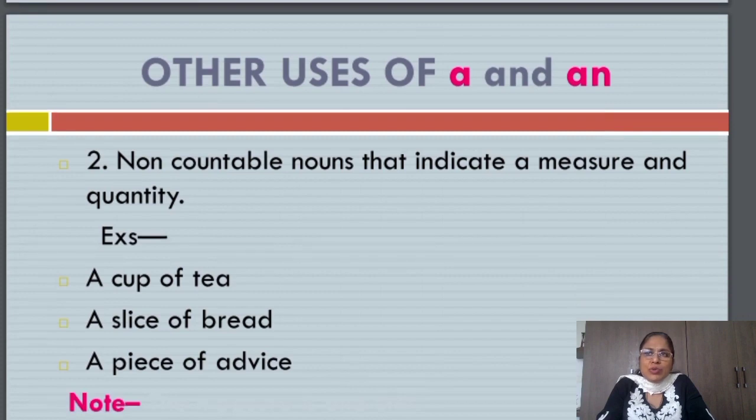Other usages: those non-countable nouns that can be measured or put into a quantity. For example, I can never say get me a tea. It's wrong. But I can definitely say get a cup of tea for me. Why? Because a cup can be counted. Tea cannot be counted, but it can be put into a cup and that cup can be counted.